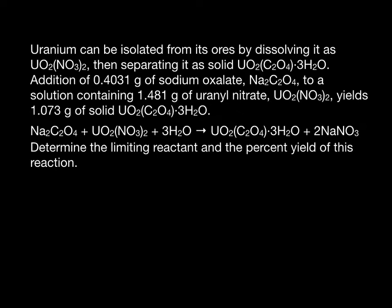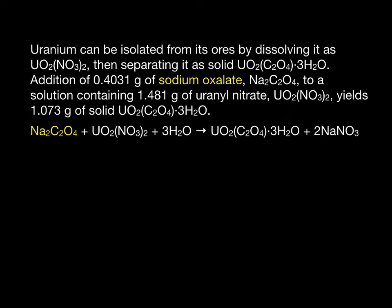It's a very wordy problem with some complicated-looking formulas, but our approach to solve this problem is like any other problem. We're asked to determine the limiting reactant and the percent yield from this situation. Here we are mixing 0.4031 grams of sodium oxalate, highlighted here in yellow, with 1.481 grams of uranyl nitrate, highlighted here in green.